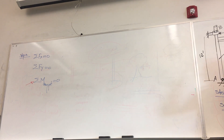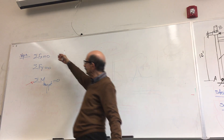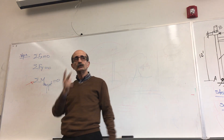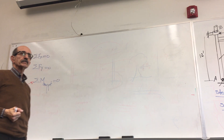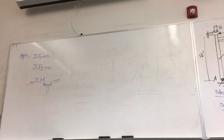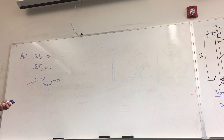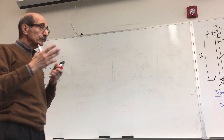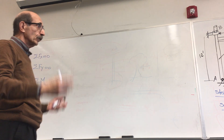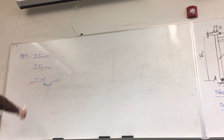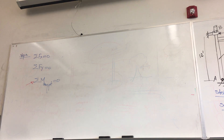In 2D rigid body equilibrium, you have no more than three unknowns; otherwise you cannot solve the problem because you only have three equations. So if I take summation of moments about point A, this 5,000-pound force generates a clockwise moment with a vertical distance of 8 feet: negative 5,000 times 8. Then RB also acts clockwise about A with a distance of 12 feet: negative 12 times RB equals zero.